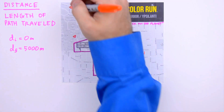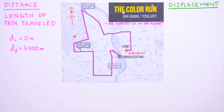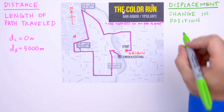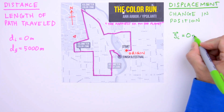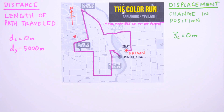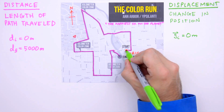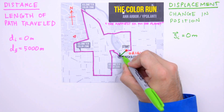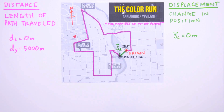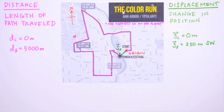Now let's look at displacement. Displacement is defined as a change in position — specifically, relative to our origin. The initial displacement s-sub-i equals 0 meters, since our initial position coincides with the origin. The final displacement is the length of a straight line drawn from the origin to our runner's final position, the finish line. We'll draw an arrow from the origin to the final position to represent final displacement s-sub-f. The length of this displacement is about a quarter kilometer, so s-sub-f equals 250 meters southwest.